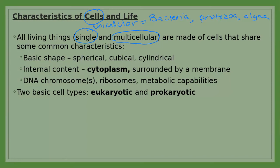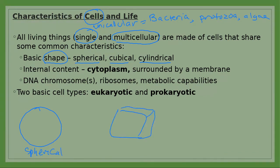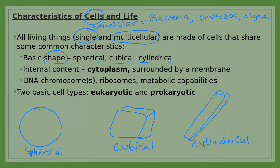All cells have a shape. There are three basic shapes: spherical, which looks like a ball; cubical, which looks like a cube; and cylindrical, which is a long cell. There are also other shapes, like spiral or crescent moon-shaped, but the three basic shapes are round, cubical, and cylindrical.